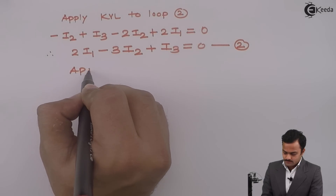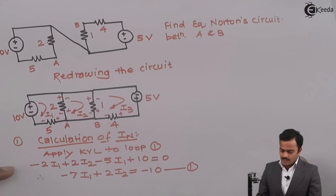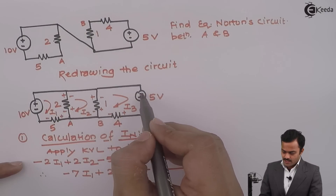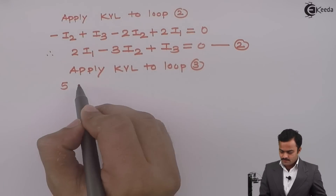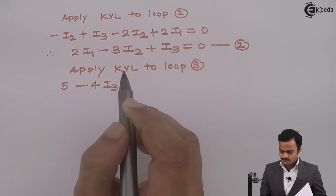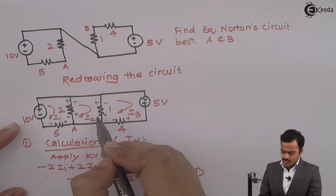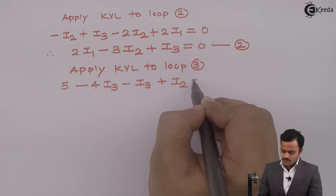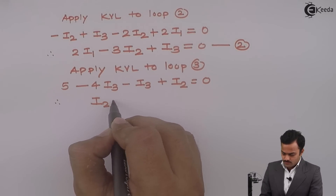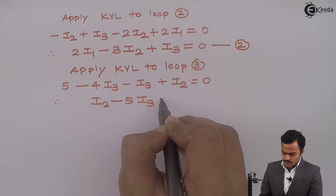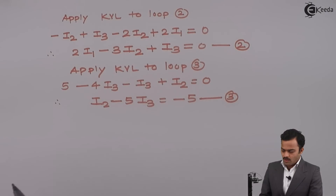Applying KVL to loop number three, starting from this point in this direction: voltage rise plus 5V, then minus 4I3, then minus I3 plus I2 equals 0. Simplifying, I get I2 minus 5I3 equals minus 5 — equation number three.